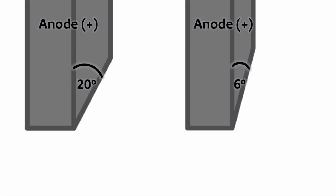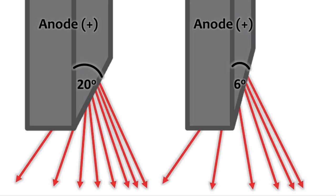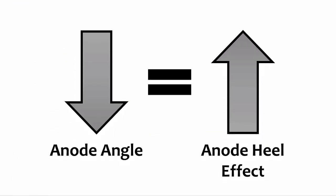A few variables can actually change the extent of the anode heel effect — in other words, the change in beam intensity across the beam isn't always the same. Decreasing the anode angle, making it steeper or smaller, increases the anode heel effect. This is because more x-rays get absorbed in the anode and the beam intensity on the anode side decreases. When we decrease the anode angle from 20 degrees to 6 degrees, an increased number of x-ray photons get absorbed, resulting in an increased difference in intensity between the anode side and the cathode side. The relationship between anode angle and the heel effect is inverse: as the anode angle decreases, the anode heel effect increases.